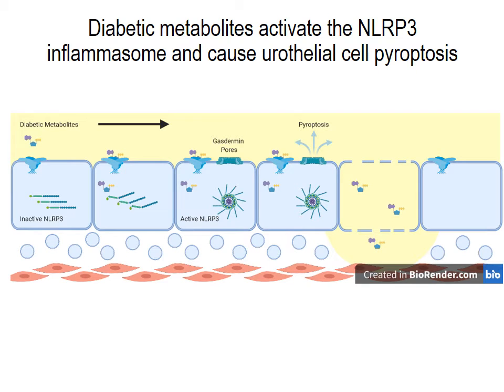One particular source of inflammation is mediated through the NLRP3 inflammasome. Diabetic metabolites will accumulate in the urine and activate the NLRP3 inflammasome within these urothelial cells, leading to pyroptosis.